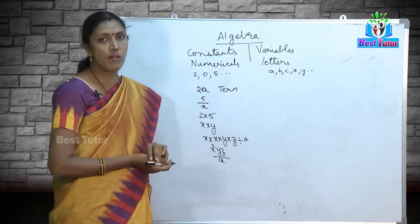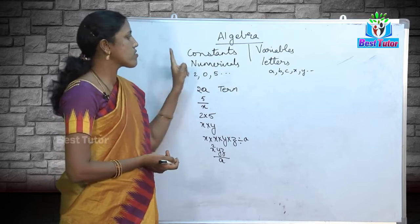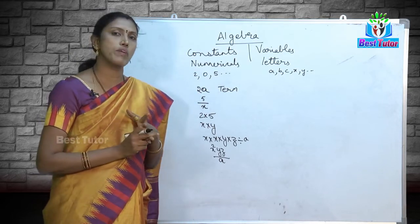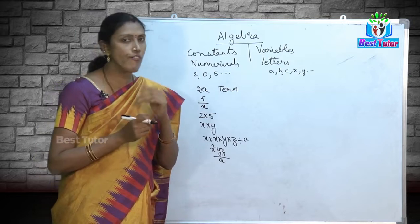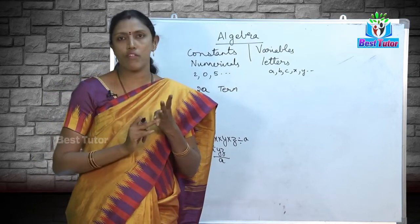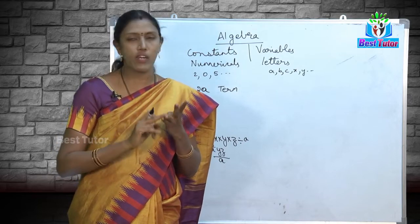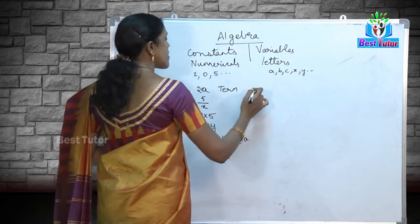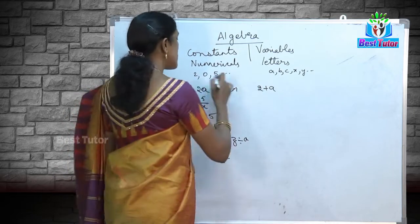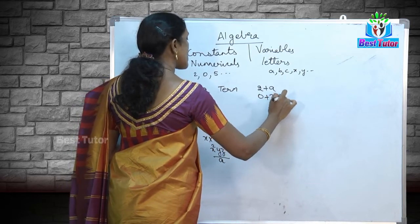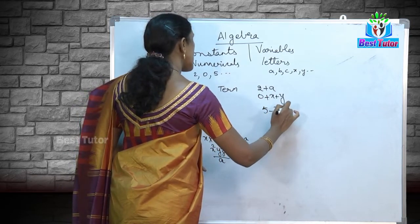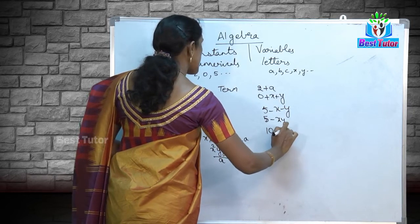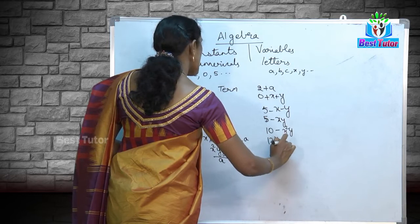We have learnt what a numerical, a variable, and a term are. Now, what if I combine constants and variables using addition and subtraction? We have four fundamental operations. Combining using multiplication and division gives terms. Combining using addition and subtraction gives something called an expression. For example, 2 + a, x + y, 5 − x − y, 10 − x²y, and x + xy are all expressions.